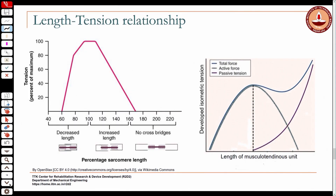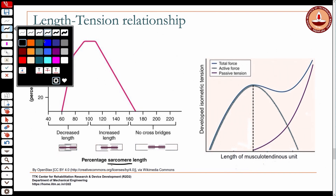Last class we looked at the length-tension relationship for the whole muscle and there were some questions regarding that which I wanted to address. If you look at this one on the left, this is for the sarcomere. This is the length-tension relationship for the individual sarcomere, which is essentially the active contributor to tension.